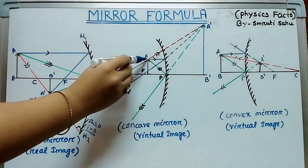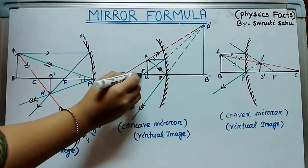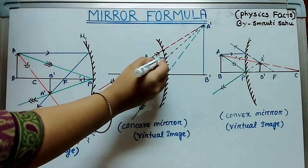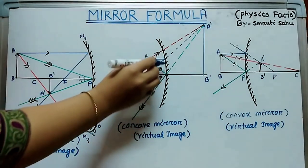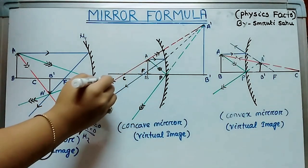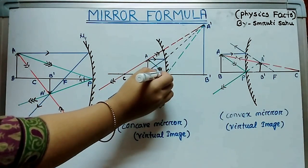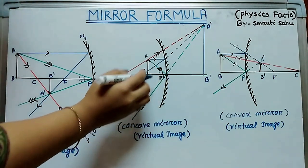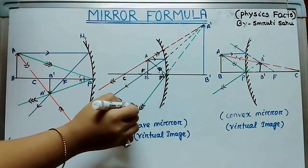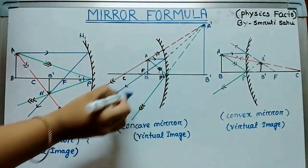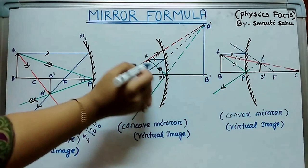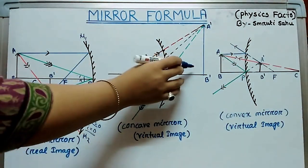In the second case, the object AB is placed between the focus and the pole. Similarly, we consider three rays: one parallel to the principal axis, which after reflection passes through the focus; another ray through the centre of curvature, which retraces its path; and a third ray obeying the laws of reflection. These three reflected rays diverge but appear to come from one point behind the mirror, where the image is formed. So this image is a virtual image.